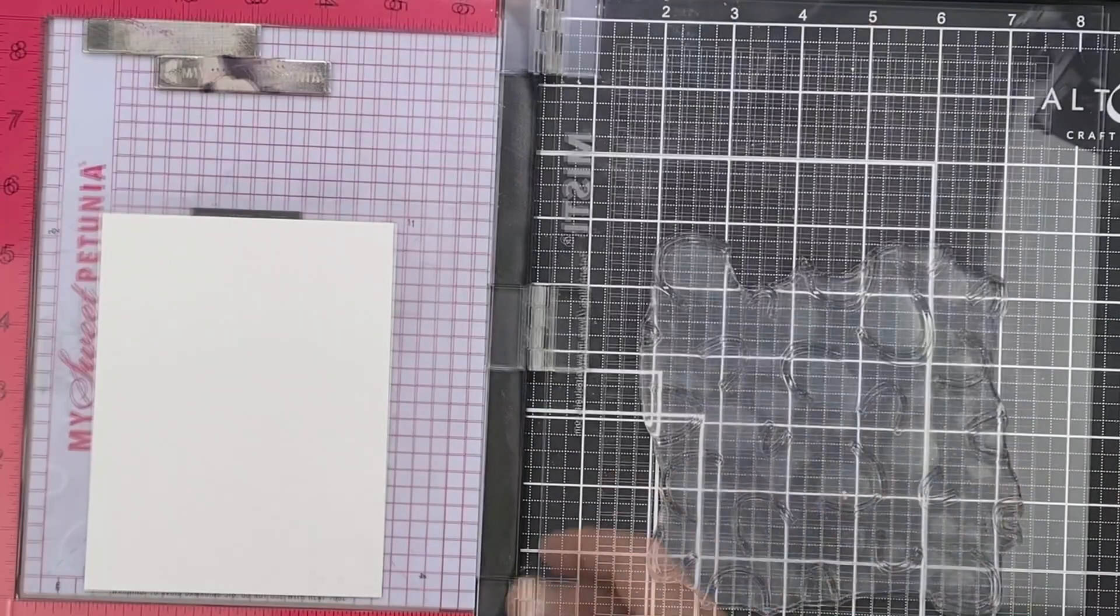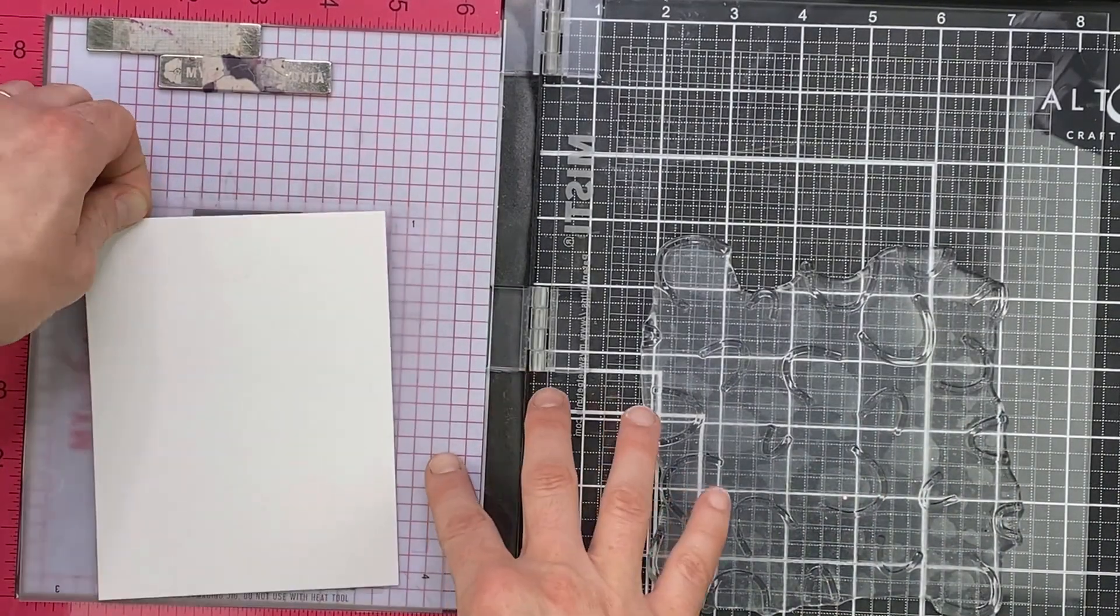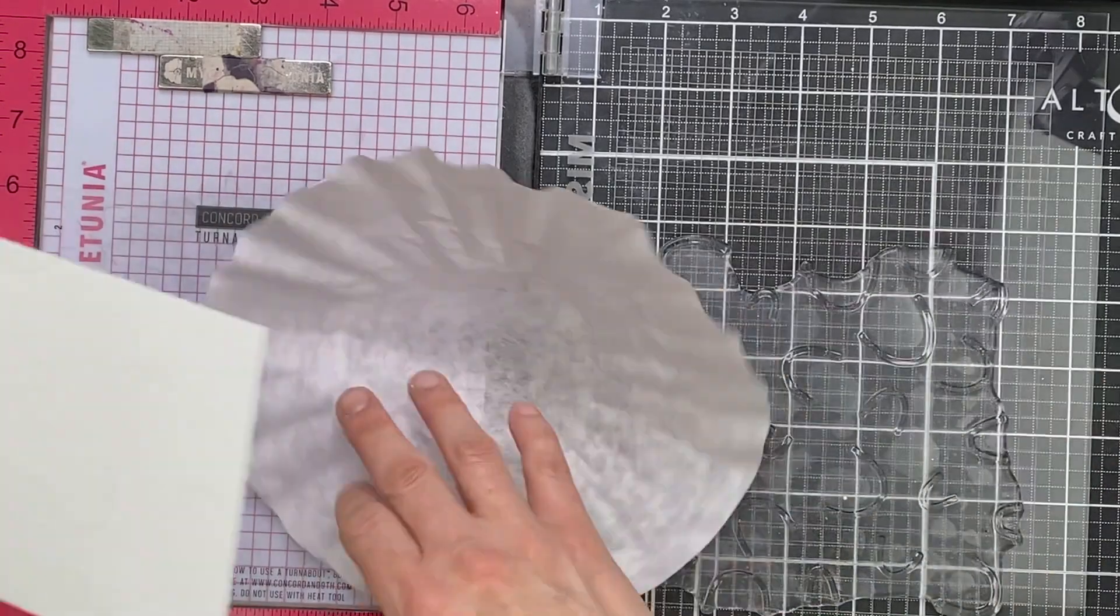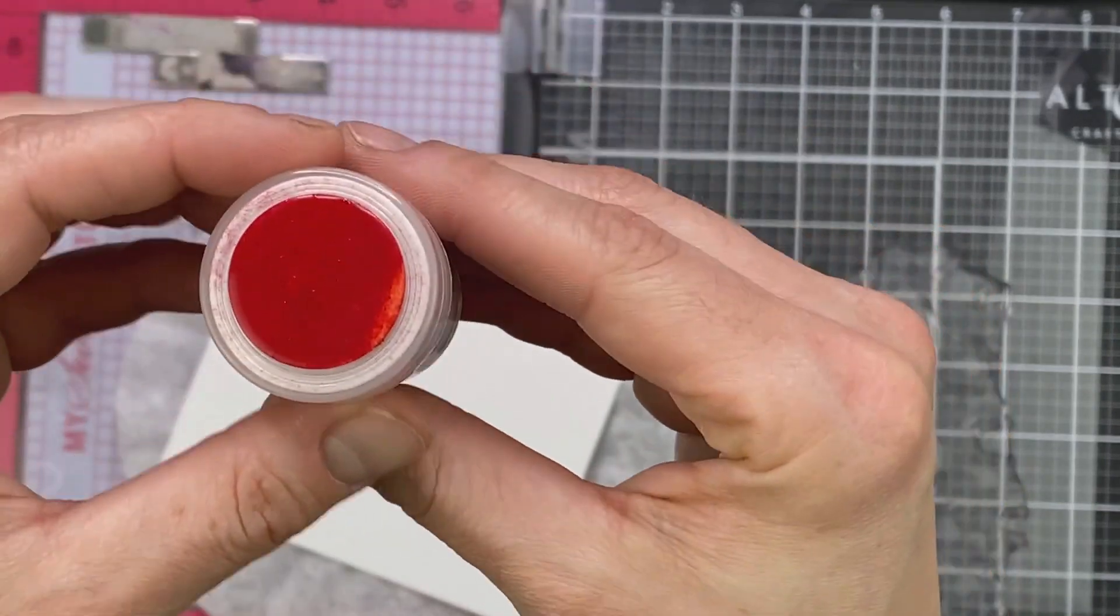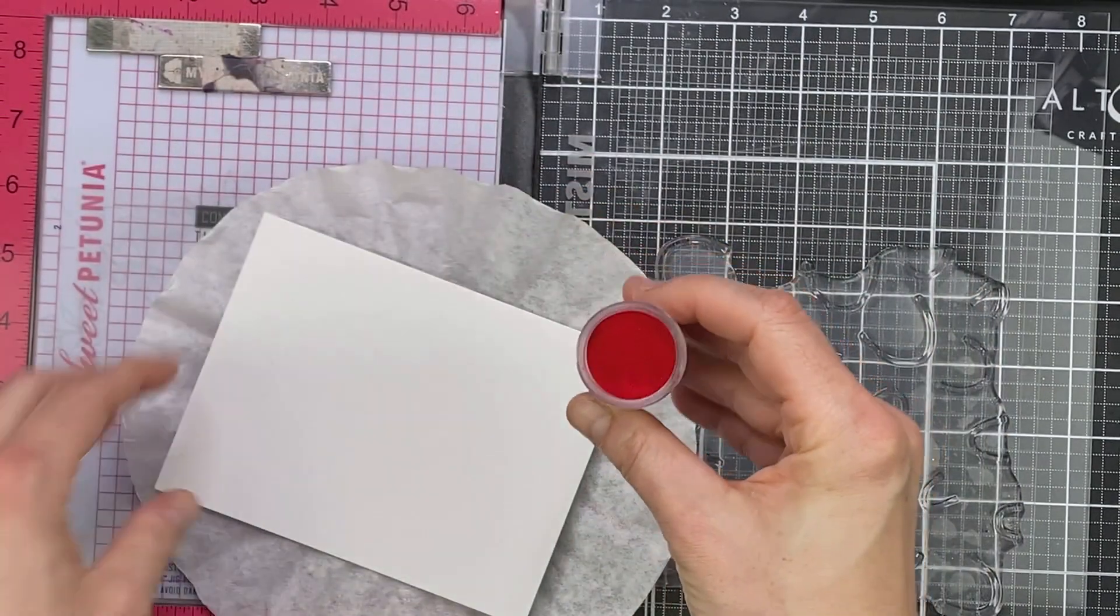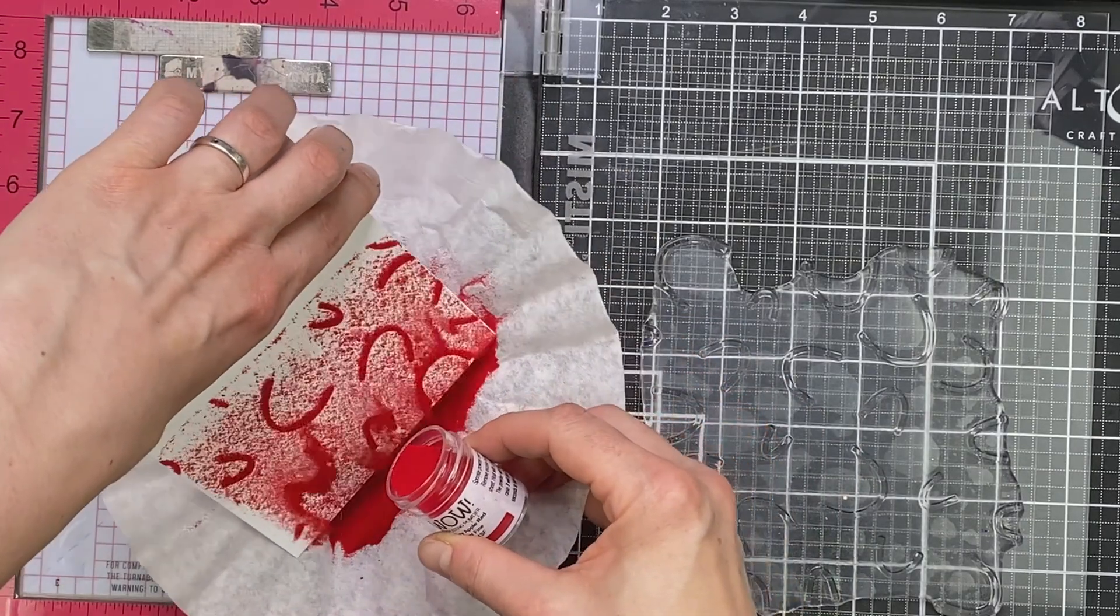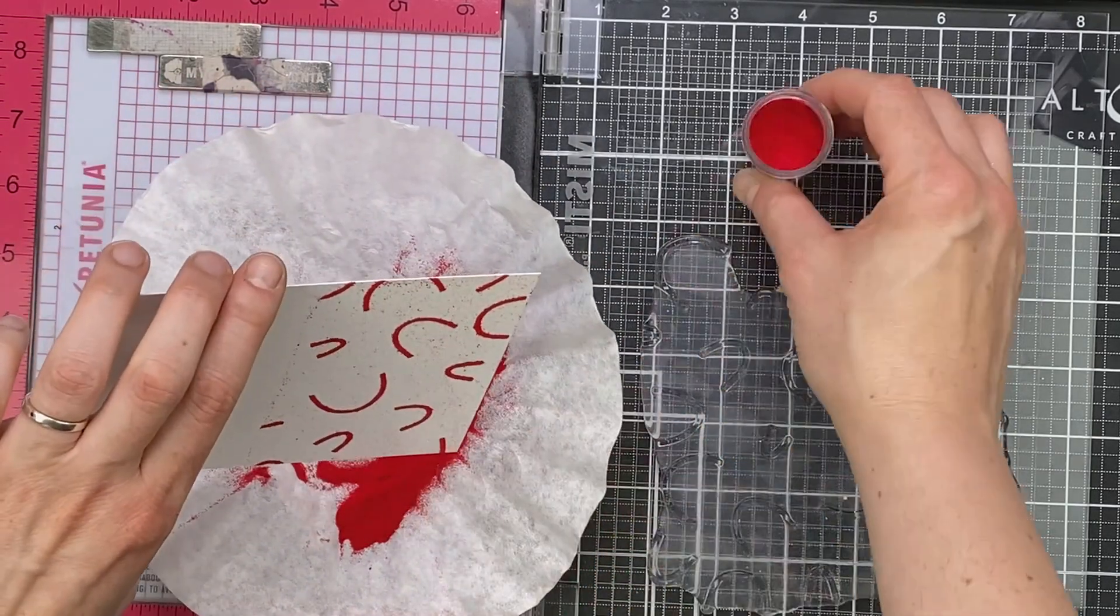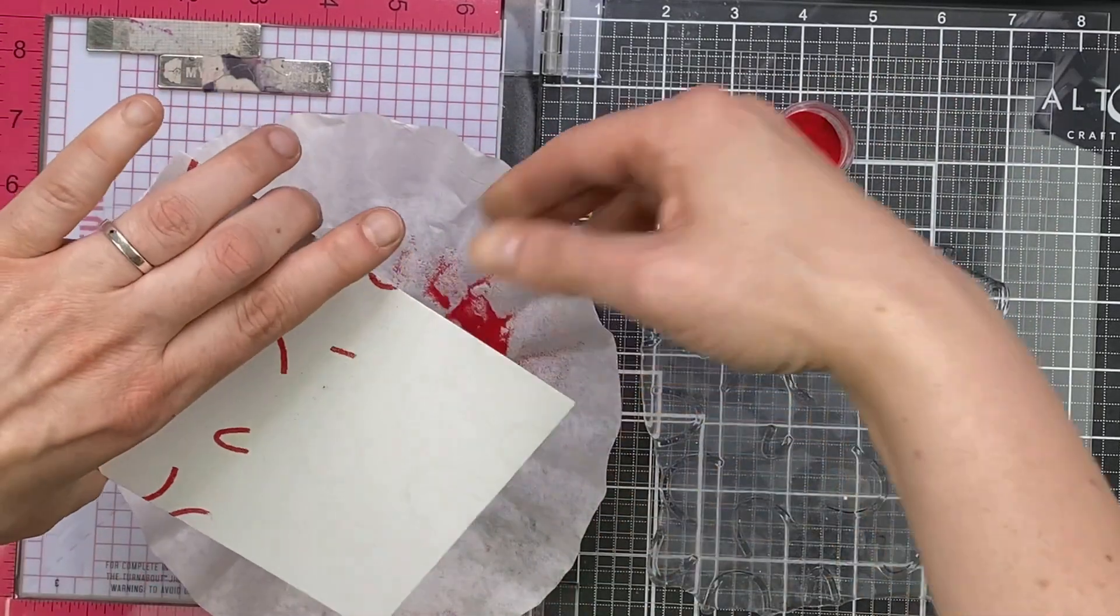So I've inked up my stamp. I've used Wow embossing ink. I'm going to do that a couple of times, and then I'm going to remove my cardstock. Use my coffee filter, and I'm going to be heat embossing it in primary apple red. I've got the superfine here. I actually don't recommend that for these more thick lines. It's actually better off using just the regular grade embossing powder.